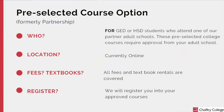Pre-selected course option, formerly known as partnership. This option is for GED or high school diploma students who attend one of our partner adult schools. These pre-selected college courses require approval from your adult school. All courses are currently online, all fees and textbook rentals are covered by our department, and we will register you in your approved courses, so you do not need to worry about registering.